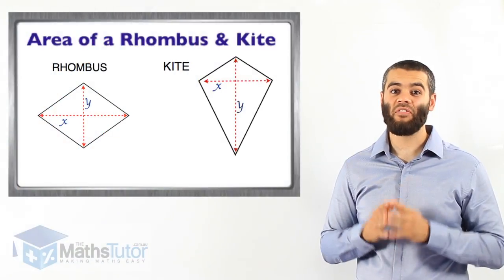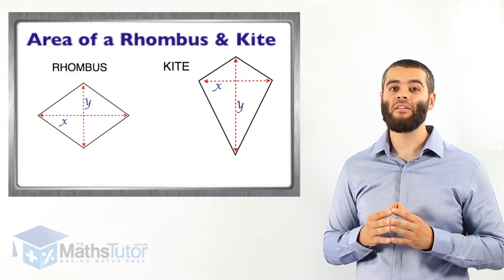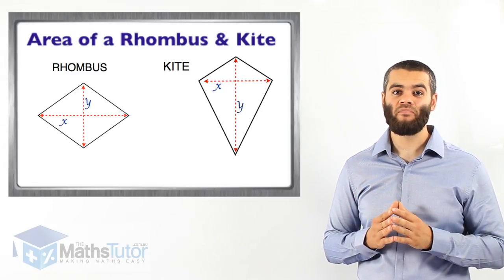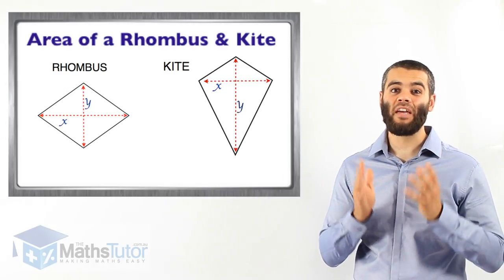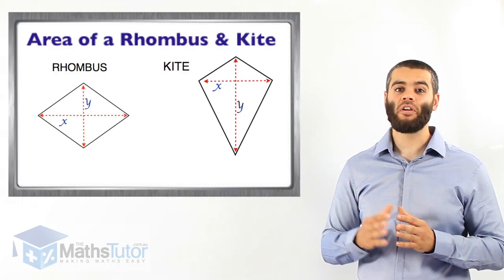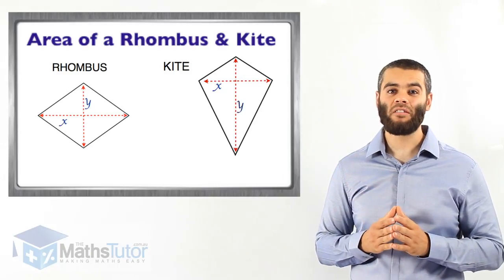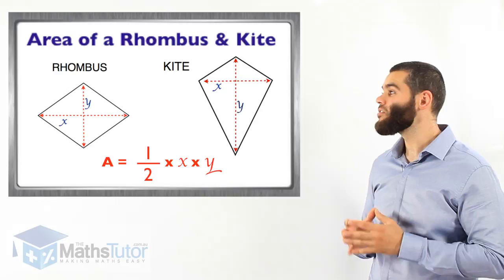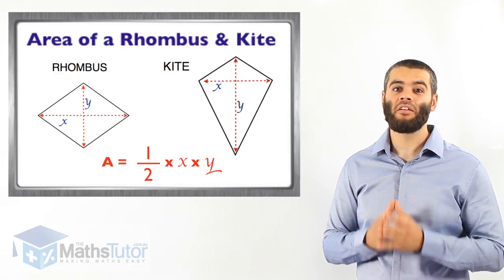We're going to work out the area of a kite and the area of a rhombus. The kite and rhombus are different shapes, however they share the same formula. The formula for a rhombus and the formula for a kite — to find the area of either shape — is half times x times y.